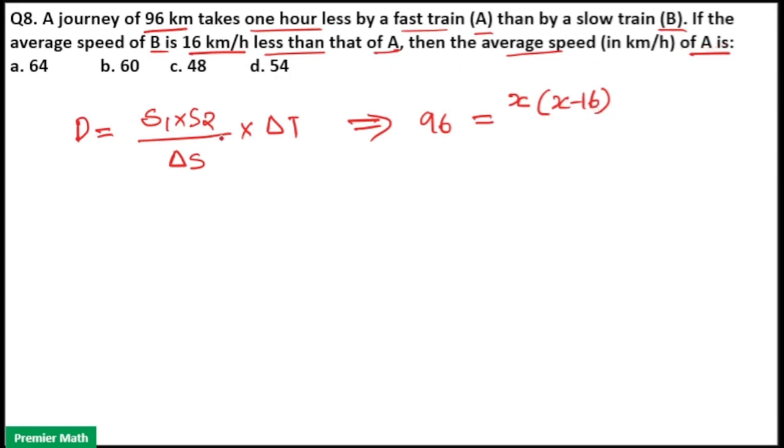So, speed of A into speed of B will be X into X minus 16, divided by difference in speed is 16 km per hour, and difference in time is 1 hour less. So, difference in time is 1 hour.